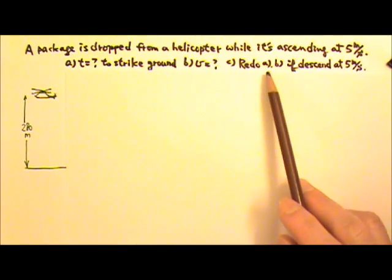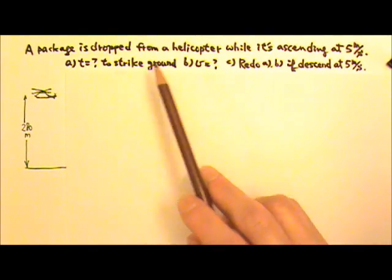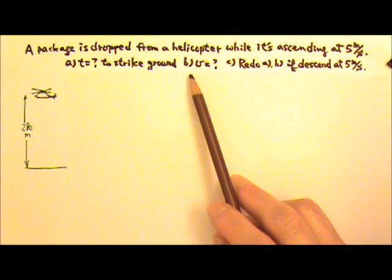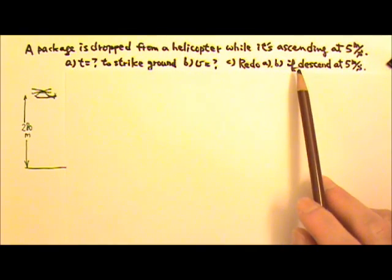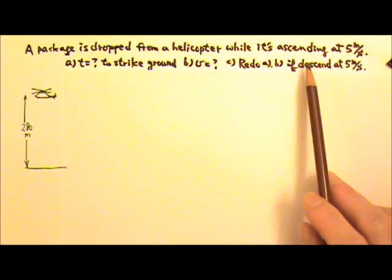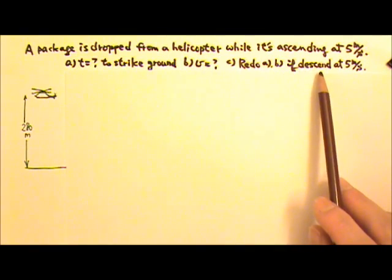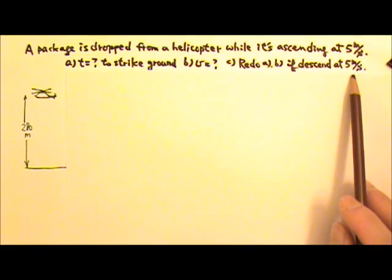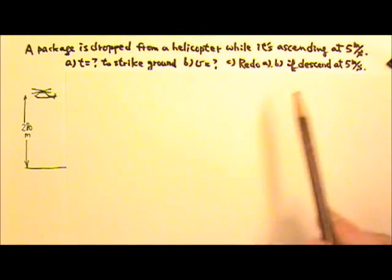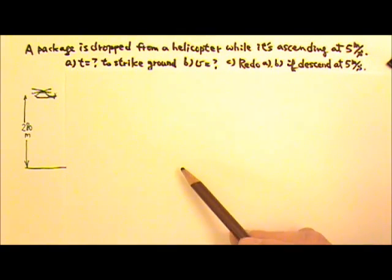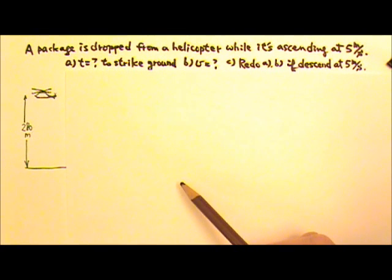Then redo parts A and B if the helicopter was descending instead of ascending at 5 meters per second when the package was released. Let's start by listing the variables.